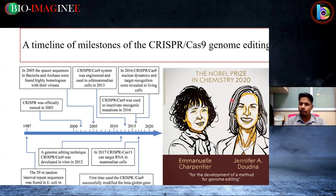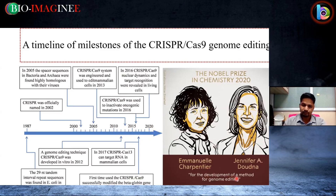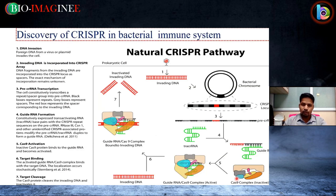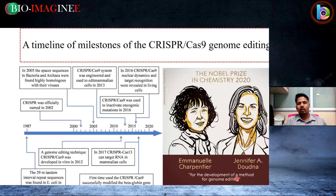In 2020, the Nobel Prize in Chemistry was given to Emmanuelle Charpentier and Jennifer Doudna for the development of a method for genome editing. This covers the history, evolution, and key milestones achieved in CRISPR-Cas9.